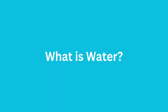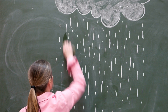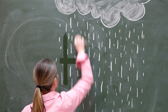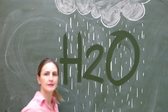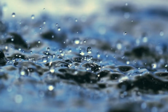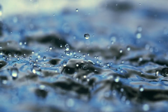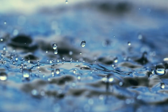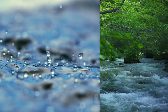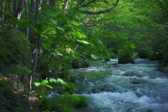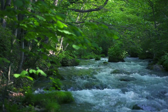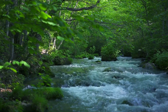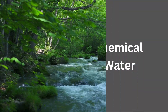What is water? Water is a simple, odorless, and colorless liquid that consists of two hydrogen atoms and one oxygen atom. It is the most abundant substance on earth and can exist in three different states: solid, liquid, and gas. Water is a universal solvent, which means it can dissolve many different substances, including minerals, gases, and organic compounds.